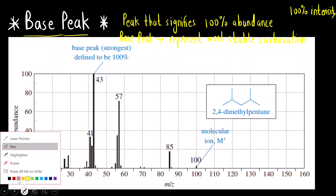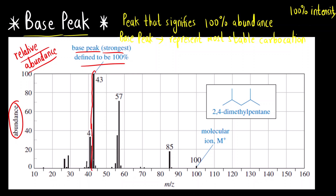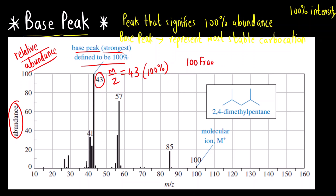Now let us see how we can identify the molecular ion and base peak in the mass spectrum. On the y-axis we have relative abundance. This is called relative abundance because we consider the base peak — the one with the highest intensity, meaning the greatest height in the entire spectrum. You can see the peak at m/z = 43 has the highest height; we consider it to be 100%.